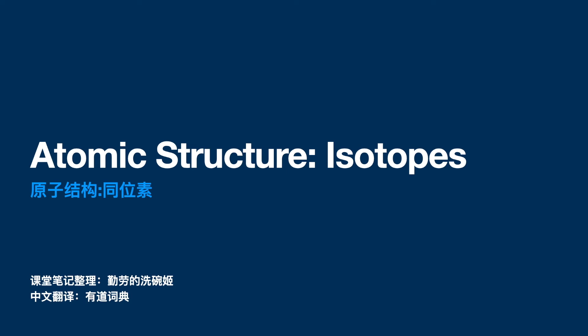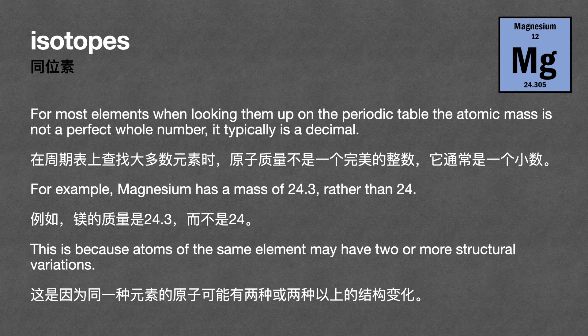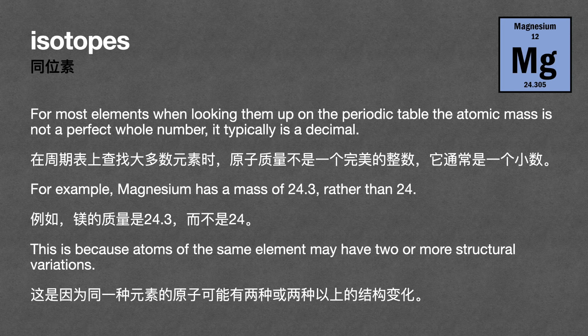Atomic structure: isotopes. For most elements, when looking them up on the periodic table, the atomic mass is not a perfect whole number — it typically is a decimal. For example, magnesium has a mass of 24.3 rather than 24.